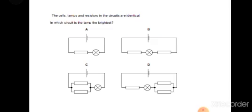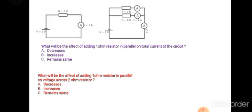The cells, lamps, and resistors in the circuits are identical — in which circuit is the lamp the brightest? The circuit with the smallest total resistance will have the brightest lamp. Where two identical resistors are in parallel, the smallest resistance is offered. Option C is correct because in this option minimum resistance is offered and the bulb will be the brightest.